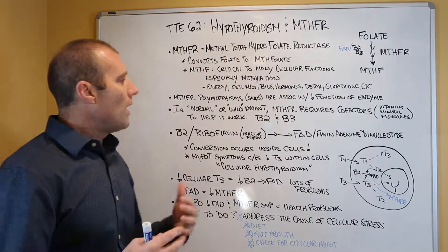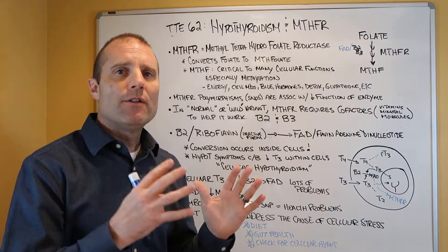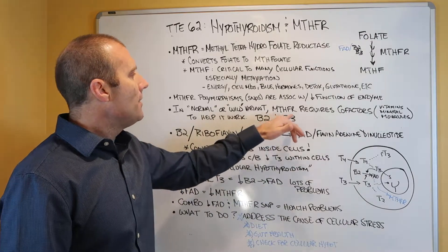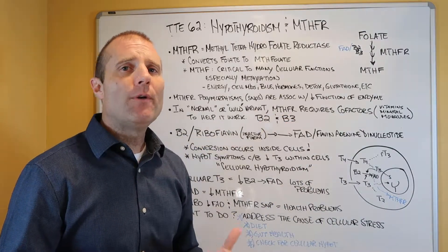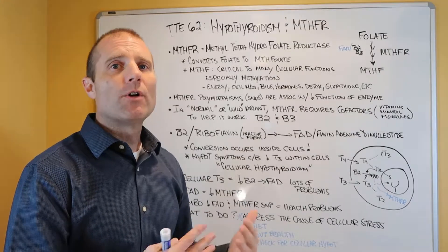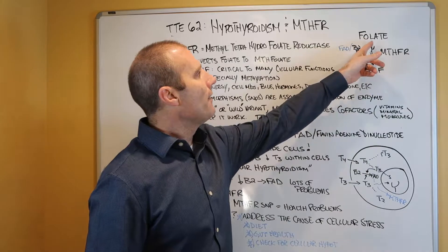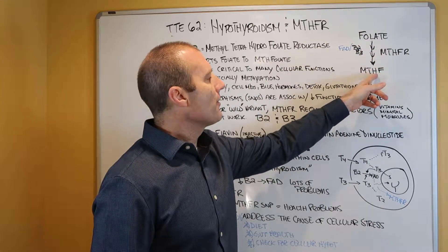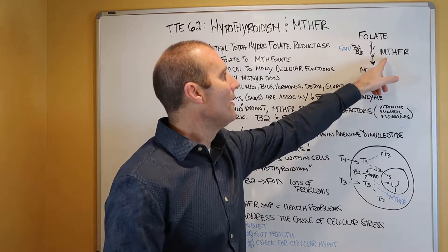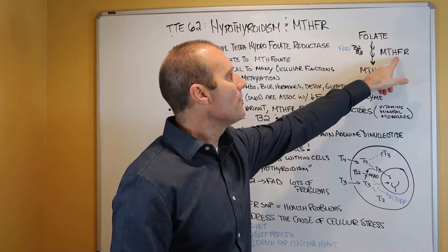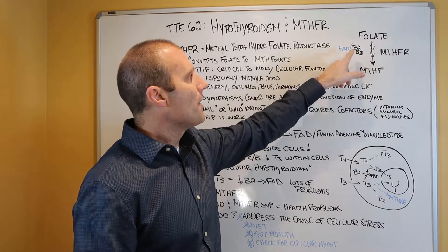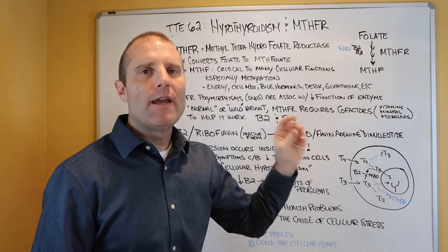In a normal or wild variant, and that means the amino acid sequence is kind of the standard, what we should see, MTHFR requires cofactors. Even if you have a SNP or a polymorphism, that enzyme still requires cofactors. When we take a look at folate being converted to methyl tetrahydrofolate, there's a number of steps here that aren't here to keep the chemistry simple. But it requires this MTHFR enzyme and then it requires cofactors. In this situation, it requires B2, vitamin B2 and vitamin B3.